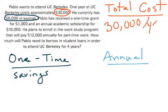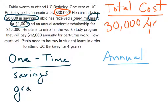Pablo has received a one-time grant for $1,000. It says right there — one time. Grants are also usually one time, unless it says it's an annual grant, which it could be.